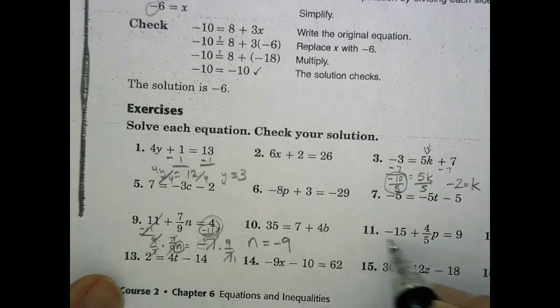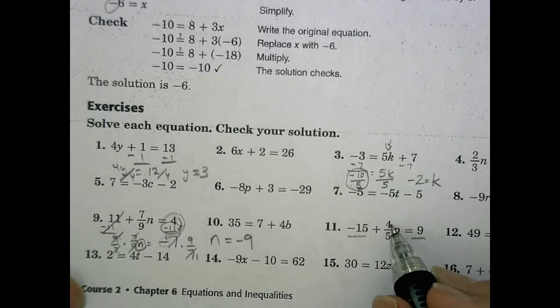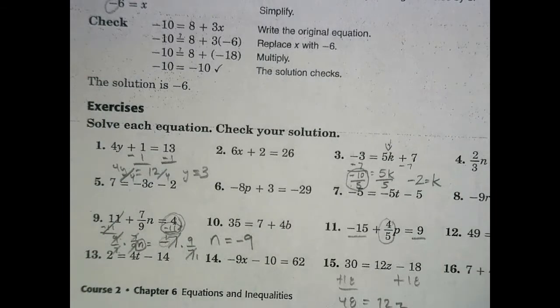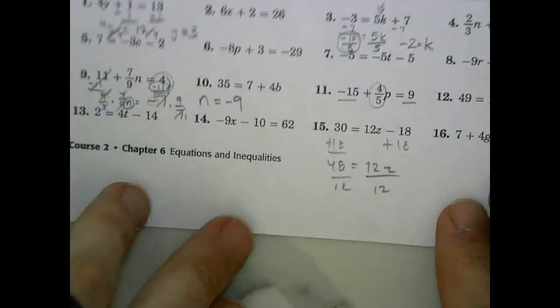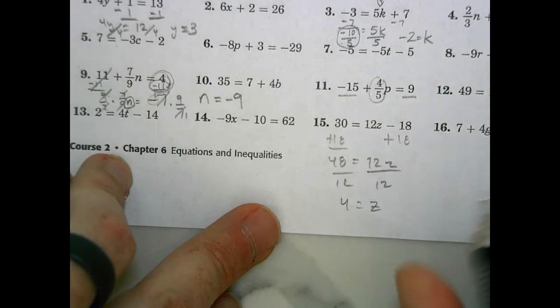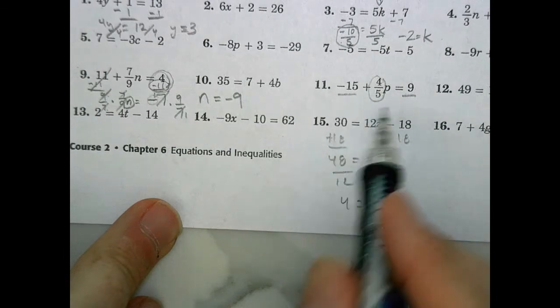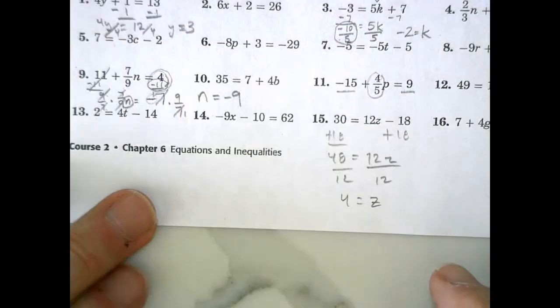Number 11 is very similar. We're going to multiply by the reciprocal and then simplify. When I look at number 15, we can see simple adding 18, adding 18. I have 48 equals 12z. Divide both sides by 12, and 48 divided by 12 is 4 equals z. So some are going to be very straightforward. Some might take a little more work when you're working with fractions and things like that.